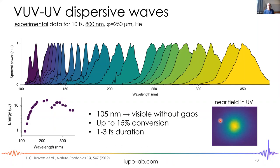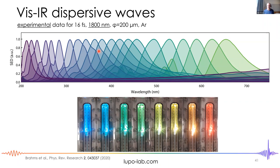Pumping at 1800 nm instead shifts the whole system to longer wavelengths, giving tunable pulses across the deep UV, visible, and near-UV range in a single system. We can generate 20 microjoules across this whole range with an appropriate core size, or slightly lower energies in a smaller core extending to shorter wavelengths. Both systems could be extended to the VUV region as well.